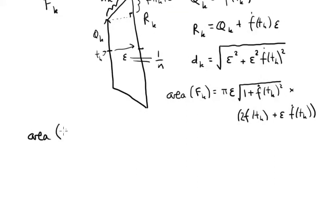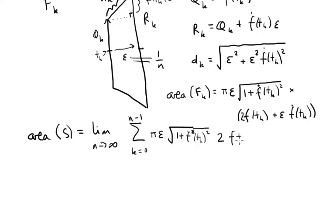Now, the area of S, the whole surface, is the limit as n goes to infinity of the sum from k equals 0 to n minus 1 of these areas. So let's write them out now. So we get π times ε times square root of 1 plus f dot squared at tₖ, then times this, 2f at tₖ.